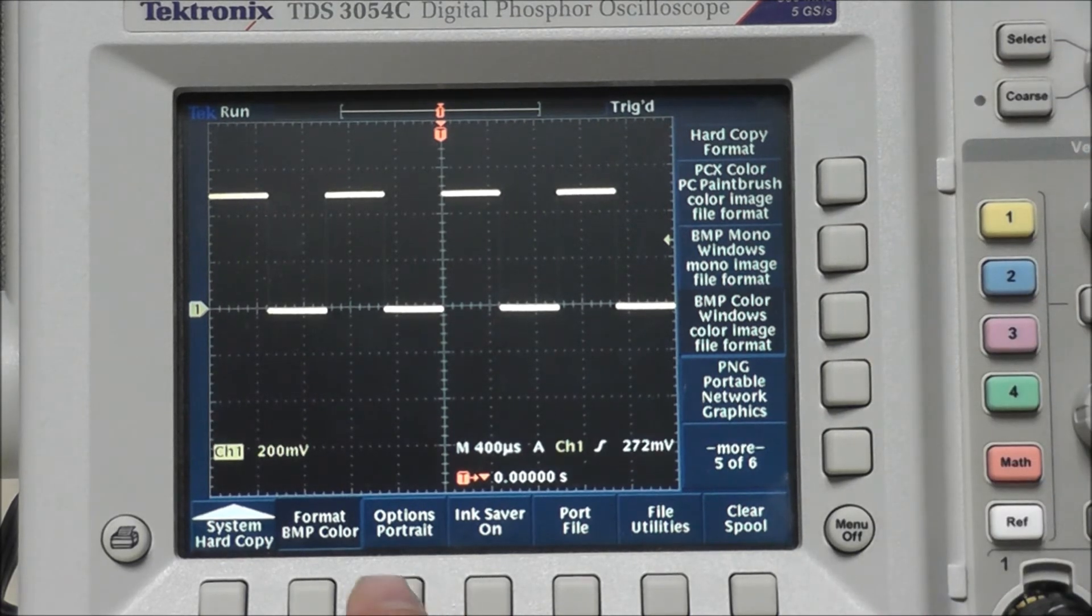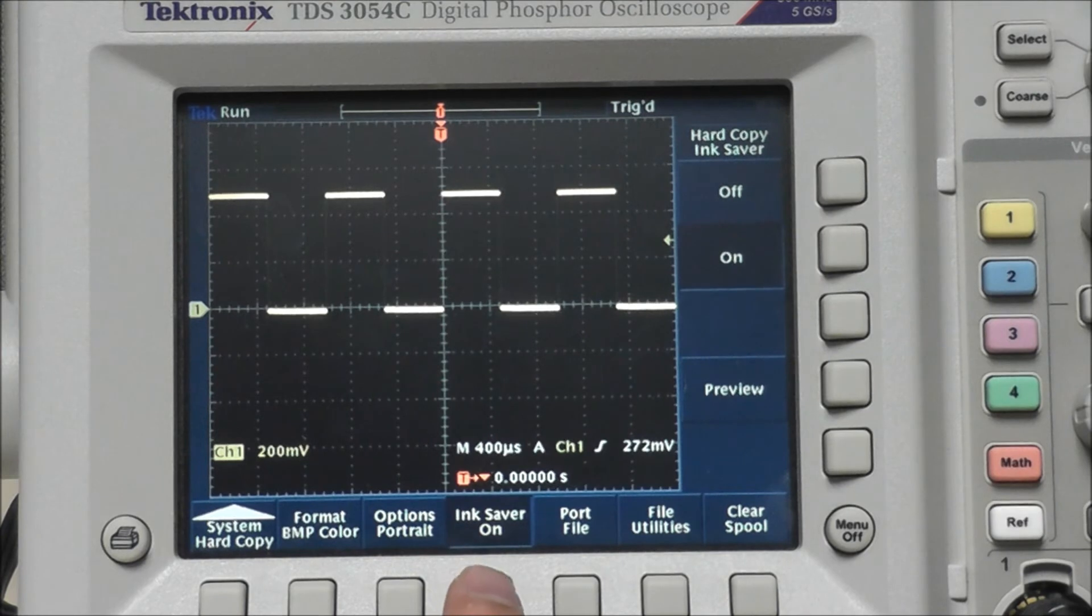Now on the bottom menu screen, there's ink saver mode. You can turn that on or off.